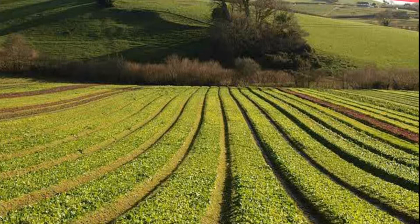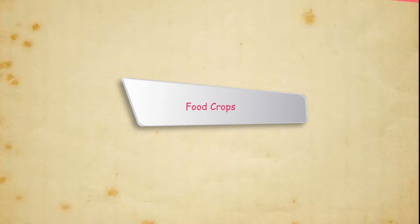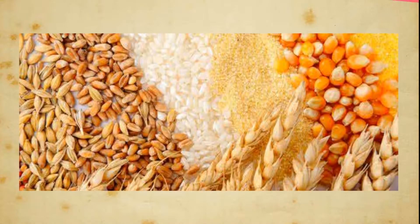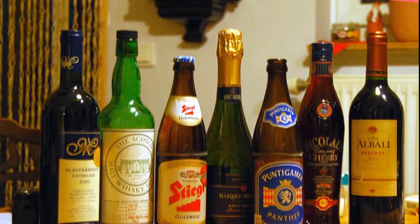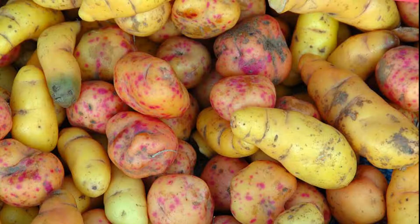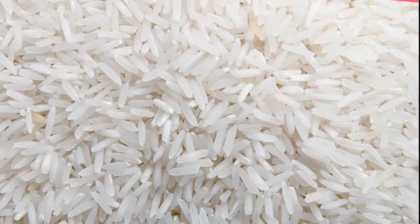Nature crops grown in the world can be grouped into the following two categories. Food crops include all cereals, pulses, oilseeds, beverages and tubers.